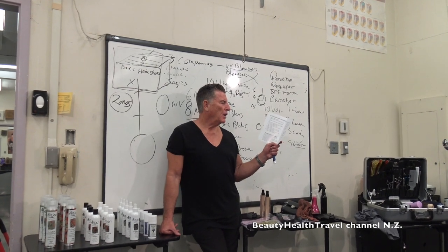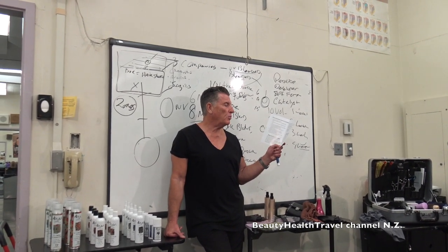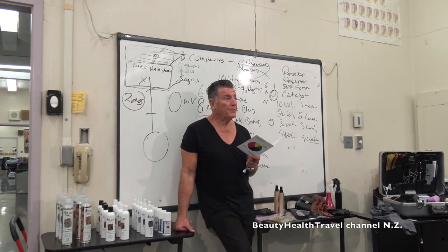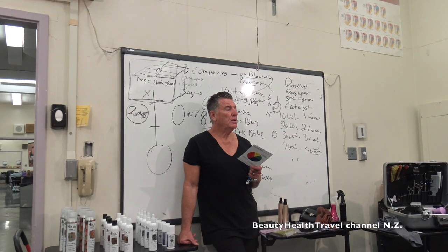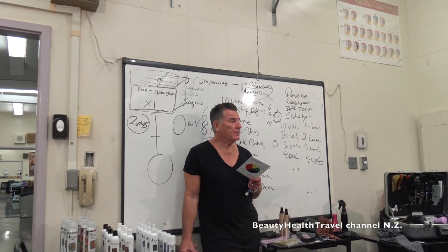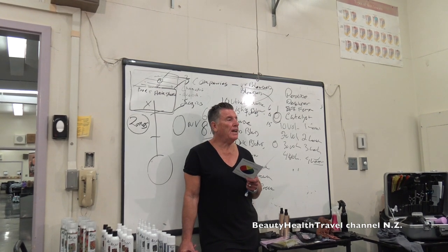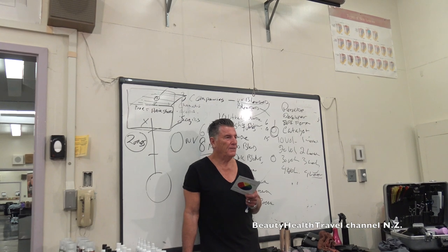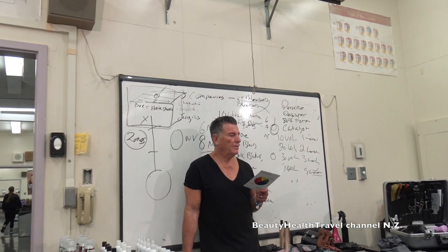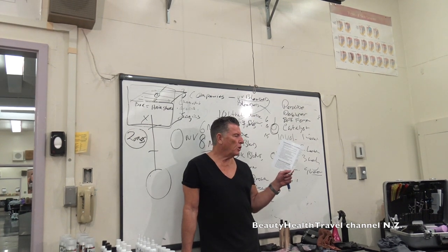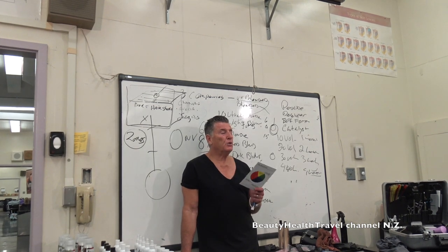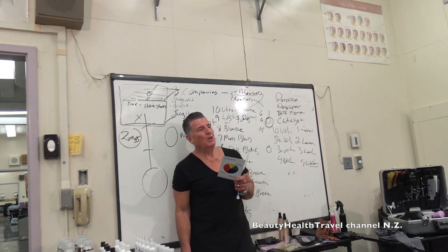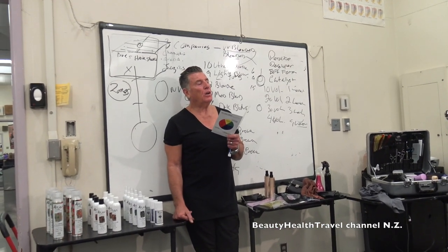Rule four: when coloring gray hair that is 50% or more, use a color with a double dye load. You'll see bottles that say 6NN or 7NN — that double letter means double pigment, and that's what gives you the coverage you need. Rule five: warm colors appear lighter in level — a level six warm will look like a level seven, and a level six cool will look like a level five. Cool colors appear darker in level. When we're coloring hair, we're not only changing color but also creating shape.